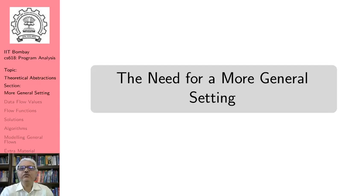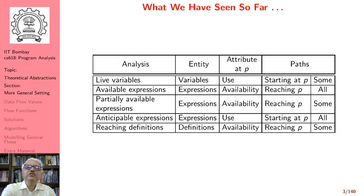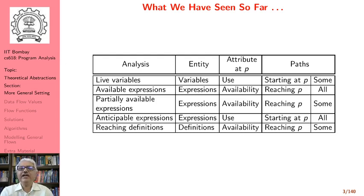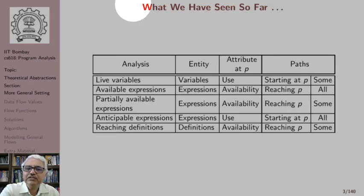Let us first begin by looking at why we need a more general setting — why what we have seen in bitvector frameworks is not sufficient. What we have seen so far includes live variables analysis, available expressions analysis, partially available expressions analysis, anticipable expressions analysis, and reaching definitions analysis. We have looked at things like the use of a variable, availability of an expression, use of an expression, and availability of a definition.